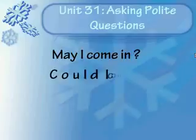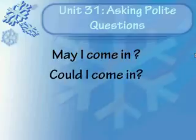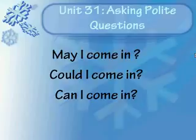For example: 'May I come in?' 'Could I come in?' 'Can I come in?' These mean that you are politely asking someone's permission to enter. When you say 'May I come in?' or 'Could I come in?' or 'Can I come in?' it means you want that person's permission to come in. All three sentences are related and they show present time.